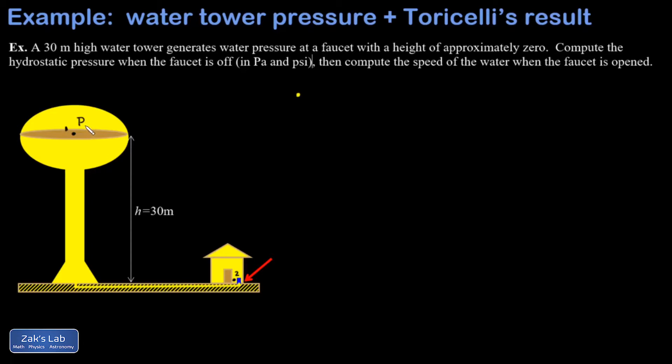If we're talking about gauge pressure here, then P1 is equal to zero. This is open to the atmosphere. Then I apply my formula for pressure at a depth under a fluid.